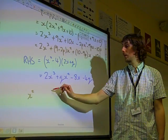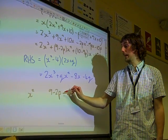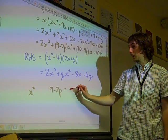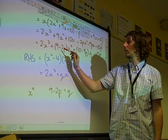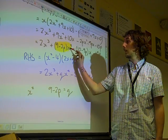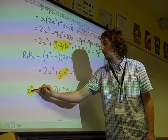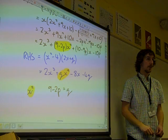Well, here we've got 9 minus 2p. And here we've got q. If you like, what we're looking at here are the x squared bits. That gives us that.